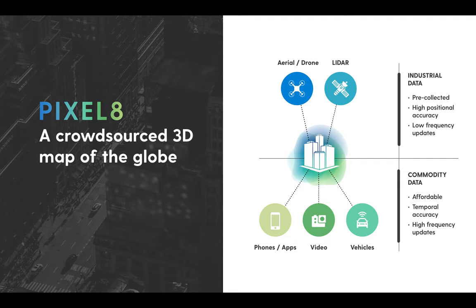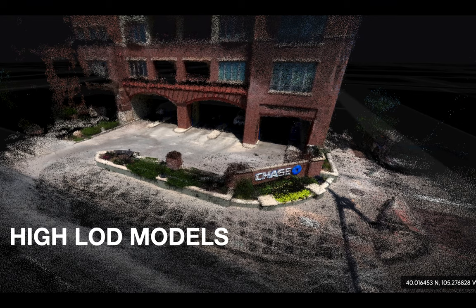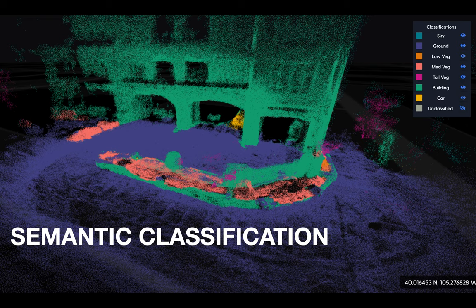First, a little background on what enables that — a complementary project called Pixelate, where I work, and we're trying to build a crowdsourced 3D map of the globe. The way we do that is take commodity videos from phones, action cameras, and vehicles, and combine that with open overhead imagery like open aerial lidar from the US Geological Survey or DEFRA in the UK, and blend those together to create really high-detail 3D models of the globe. We take a whole bunch of models collected by different people all over the globe and stitch them into one continuous model, and from there we can do things like semantic classification of the data to pull out specific objects we want to map.